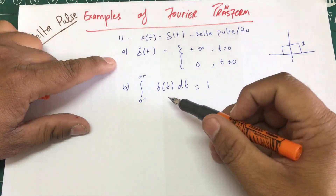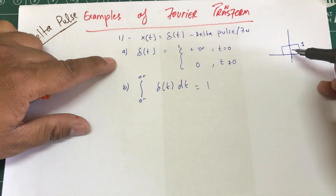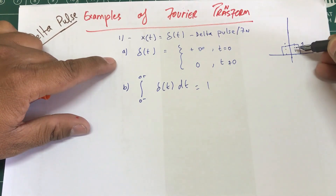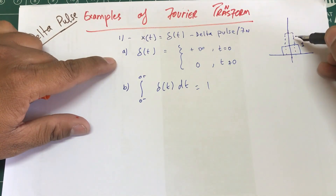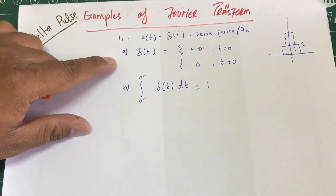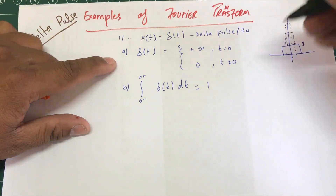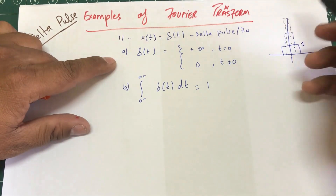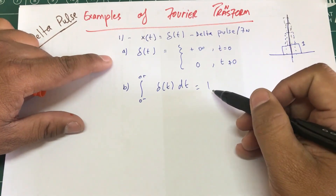Why does the integral of delta(t) dt equal one for a function that only exists at zero? Take this rectangle — the area under the curve is one. Now I'll cut it in half and double its height, so I'm stacking that half on top. The area under the curve is still one. I keep doing this — cutting it in half and doubling the height — and the area under the curve never changes. Eventually the function becomes so thin it only exists at t equals zero. That's what the delta function means.